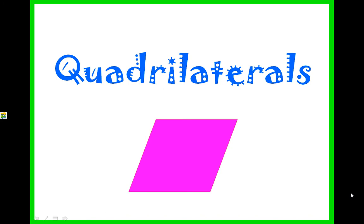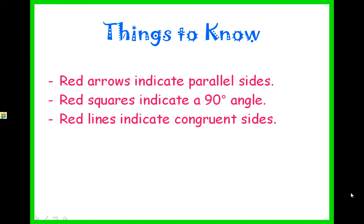Today's lesson is on quadrilaterals. Things to know: whenever you see these shapes, the red arrows indicate parallel sides, the red squares indicate a 90 degree angle, and the red lines indicate congruent sides.